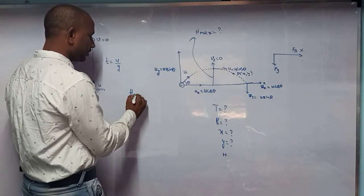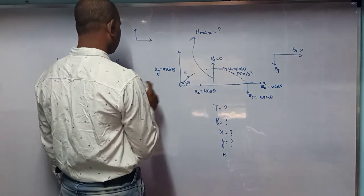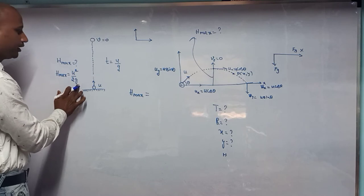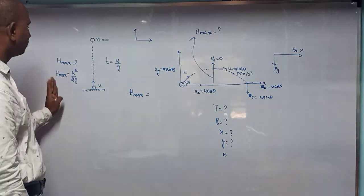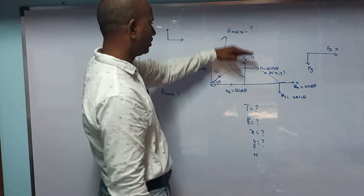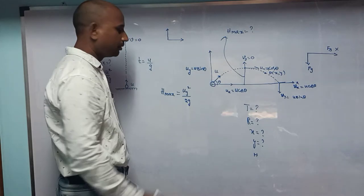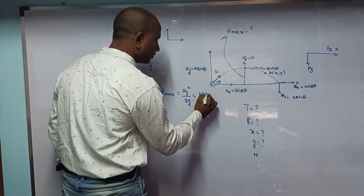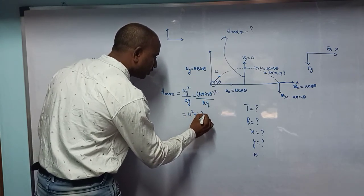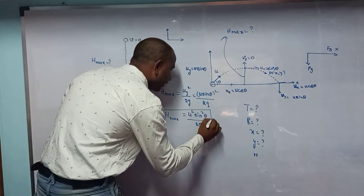Maximum height H_max: we calculate this in the vertical direction only, not the horizontal direction. The formula is H_max equals u² divided by 2g — but in vertical direction we use uy. So H_max equals uy² divided by 2g. Since uy equals u sin theta, we get H_max equals u² sin²theta divided by 2g. This is the formula for maximum height in oblique projectile motion.